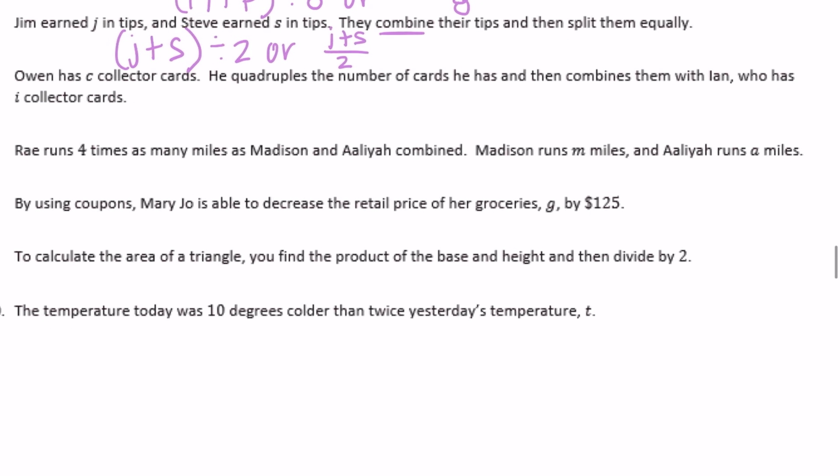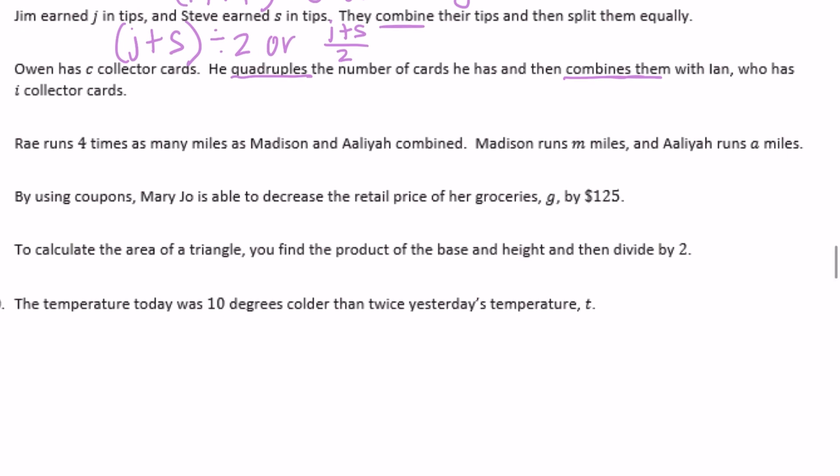Number six: Owen has C collector cards. He quadruples the number of cards he has, so times four: 4C. Then he combines them with Ian's cards, who has I cards. So 4C plus Ian's cards: 4C + I.